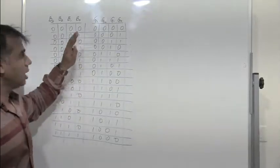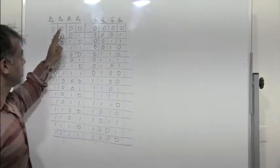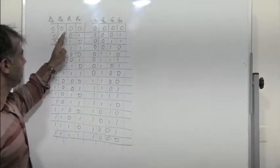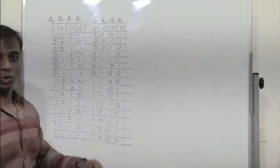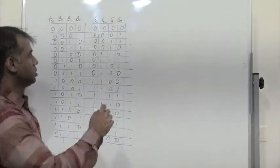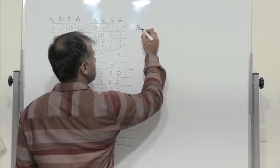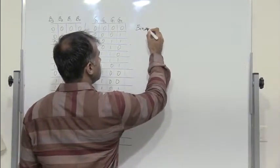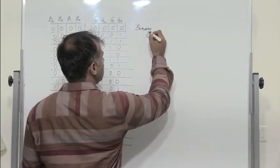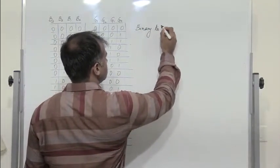In this segment, we will see how we can convert a 4-bit binary number to gray. We will be discussing binary to gray conversion.